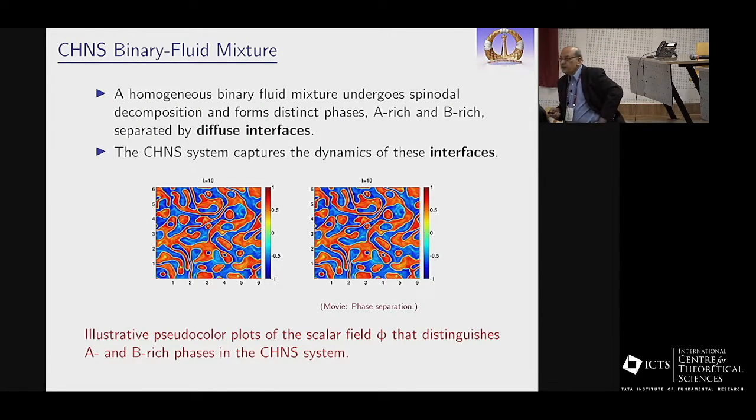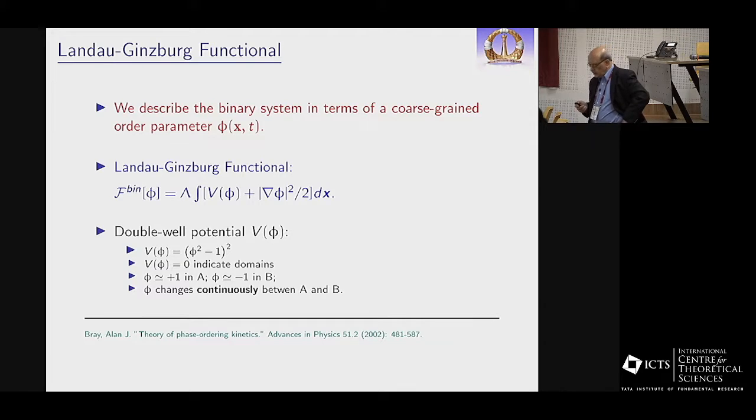If you have a homogeneous binary fluid mixture which undergoes spinodal decomposition and forms two distinct phases, A-rich and B-rich with diffuse interfaces, you use a Cahn-Hilliard model to handle that.